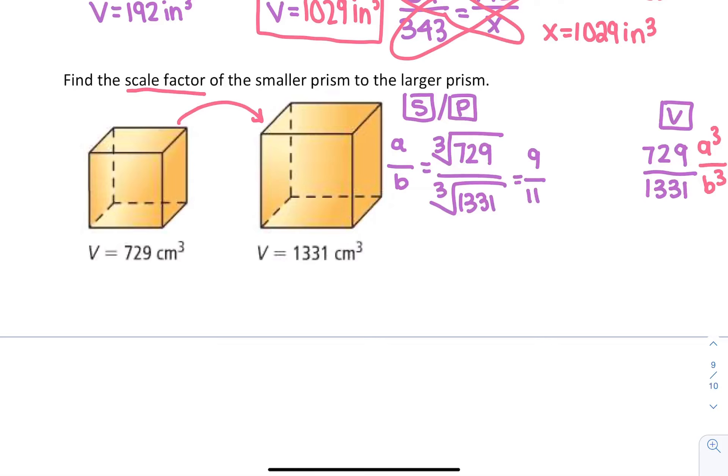If we also wanted to know the area ratio, we would take that and square it. So we would get 81 over 121. Now we have our three ratios.